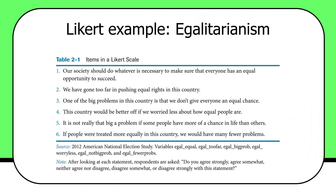Our society should do whatever is necessary to make sure that everyone has an equal opportunity to succeed — if you agree with that, that's an indicator of greater egalitarianism. Item two: we've gone too far in pushing equal rights in this country. That's reverse coded. Question designers do this so that respondents don't fall into response set — just agreeing with everything or disagreeing with everything. But you can recode the values so that you have a nice scale coded in one direction.